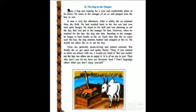The dog was quite hungry. He stood in his stall and was planning to eat the hay that was put in the manger for him. However, when he reached for the hay, the dog saw him standing in the manger. He began to bark loudly at the ox. Each time that the ox came near the hay, the dog snarled, barked and snapped at the ox.